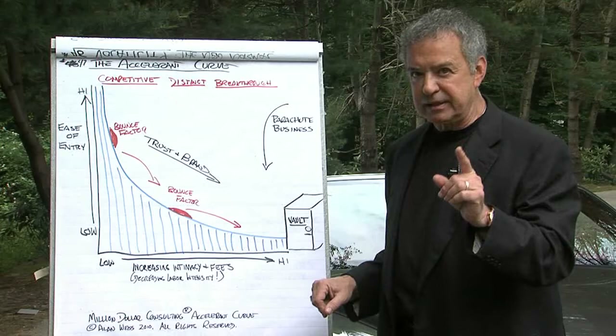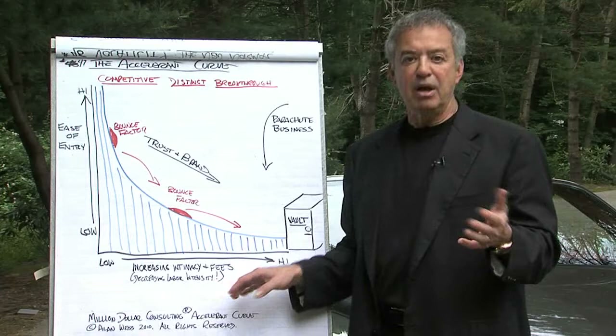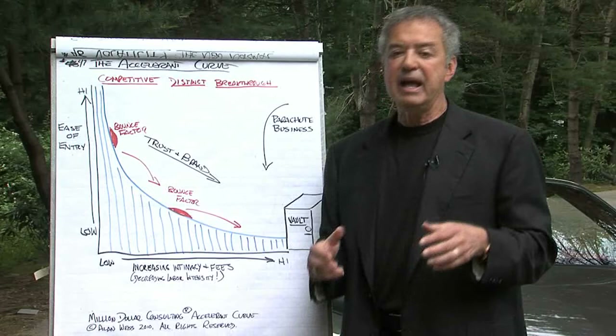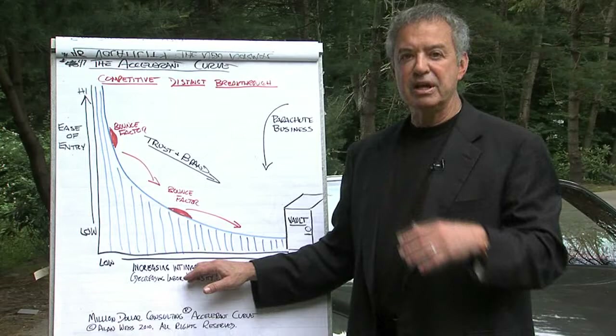Ironically, as you go from left to right, labor intensity decreases. Now how can that be if intimacy increases and fees increase? It decreases because when people are on retainer, for example, that's an intimate relationship — but they might only access you a few times a month, and usually it's remotely. So you have this wonderful, sophisticated dynamic of higher fees, more intimacy, less business needed because fees are higher, but also less labor intensity.